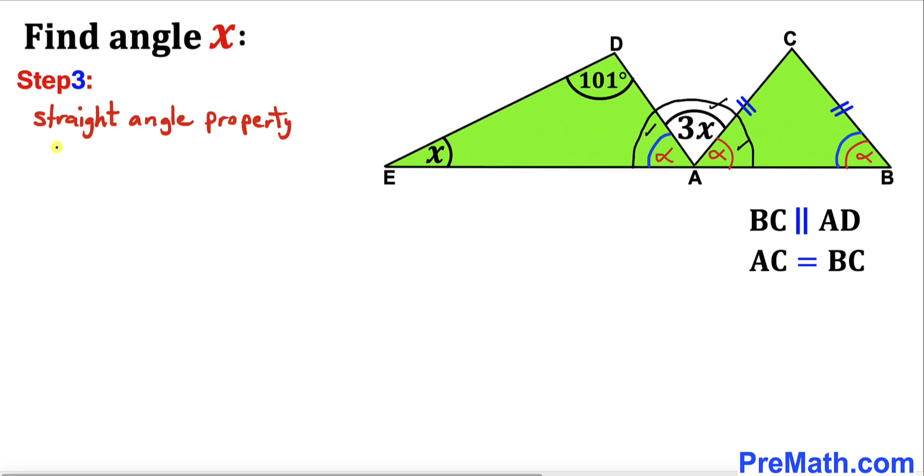Therefore, I am going to write down alpha plus 3x plus alpha must be 180 degrees. If we combine the like terms, alpha plus alpha gives us 2 alpha plus 3x equals 180 degrees.